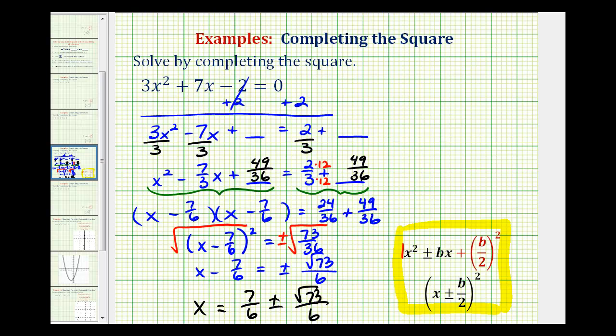Because of the √73, we can tell we have two real irrational solutions. Keep in mind, we have two solutions here: one where we add √73/6, and one where we subtract √73/6.